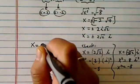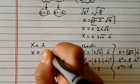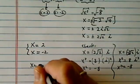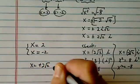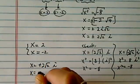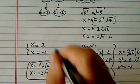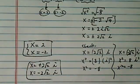So here we have four solutions: x = 2, x = -2 - those are the two real ones. And then we have the two conjugates: x = 2√2 i and x = -2√2 i. So here's our complete solution set.